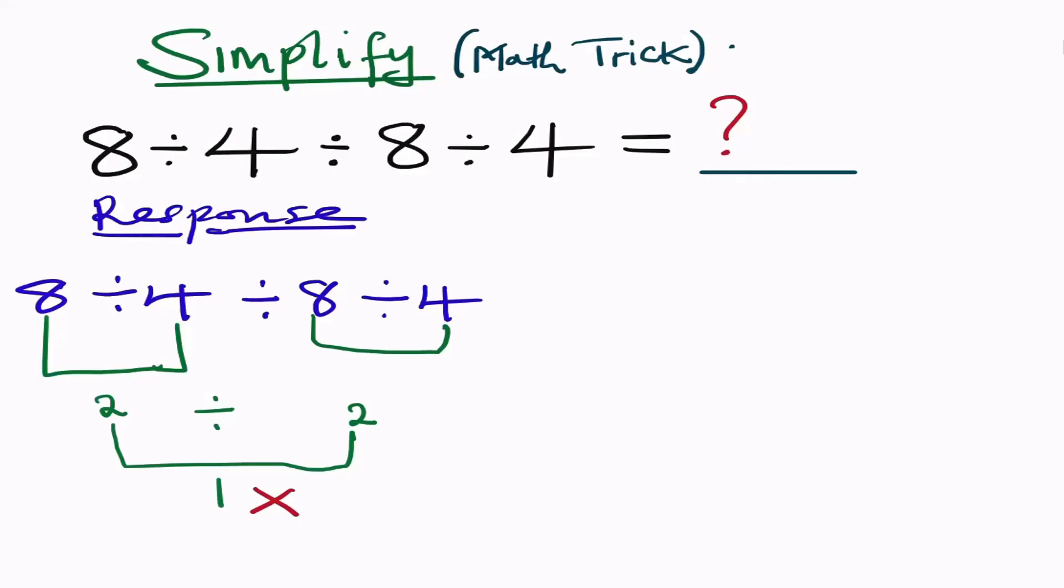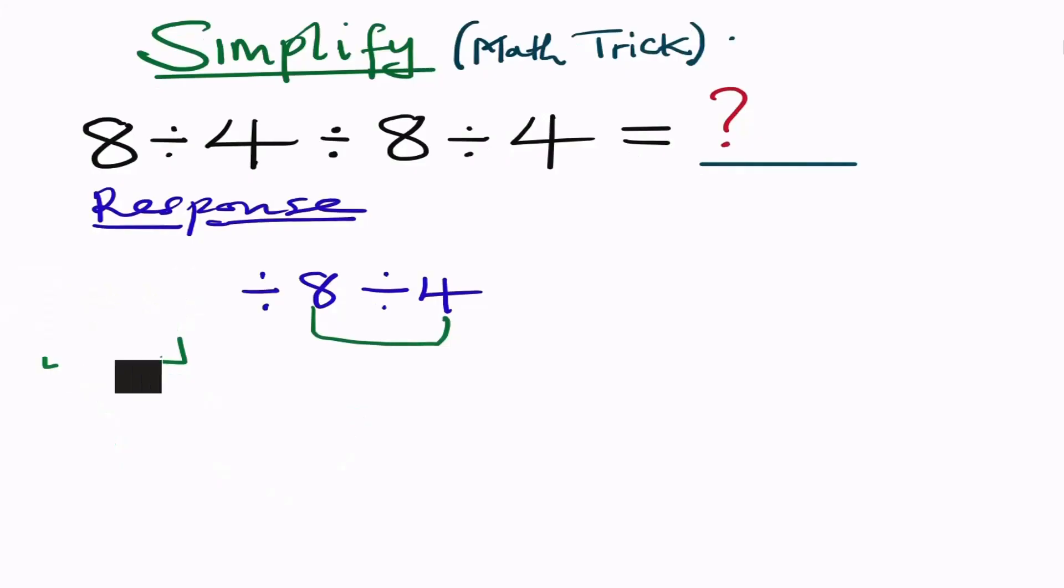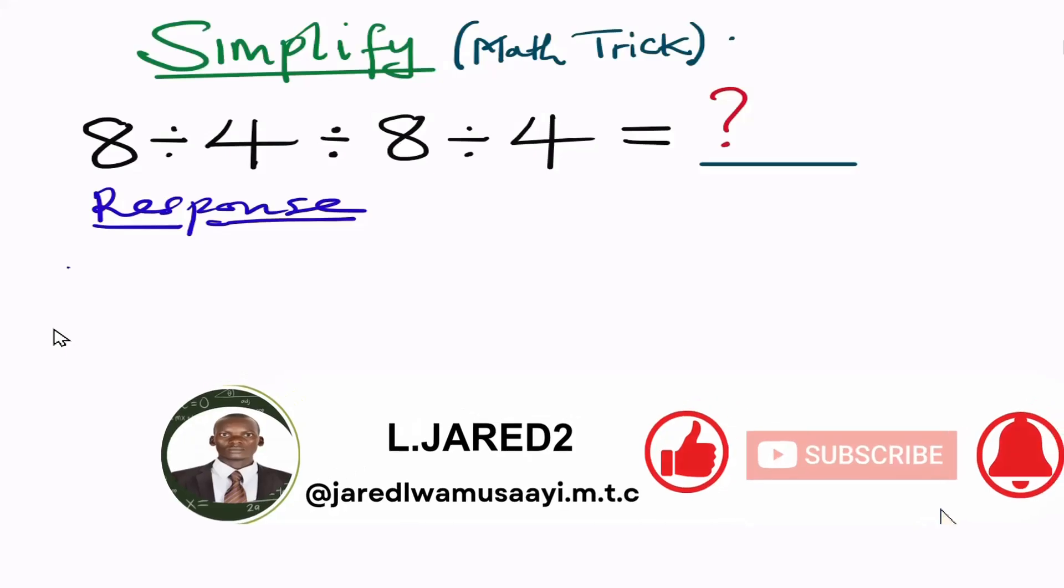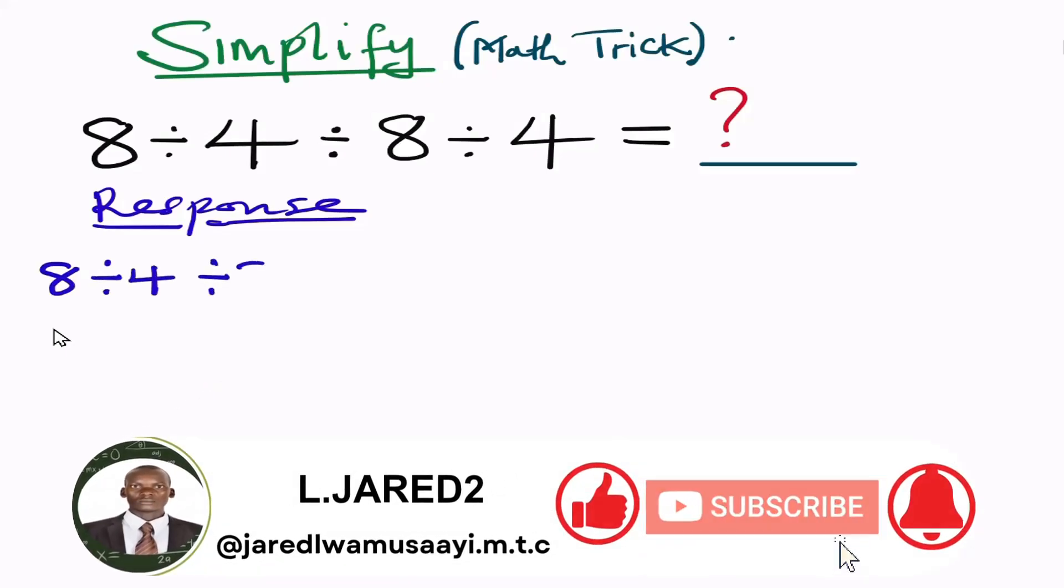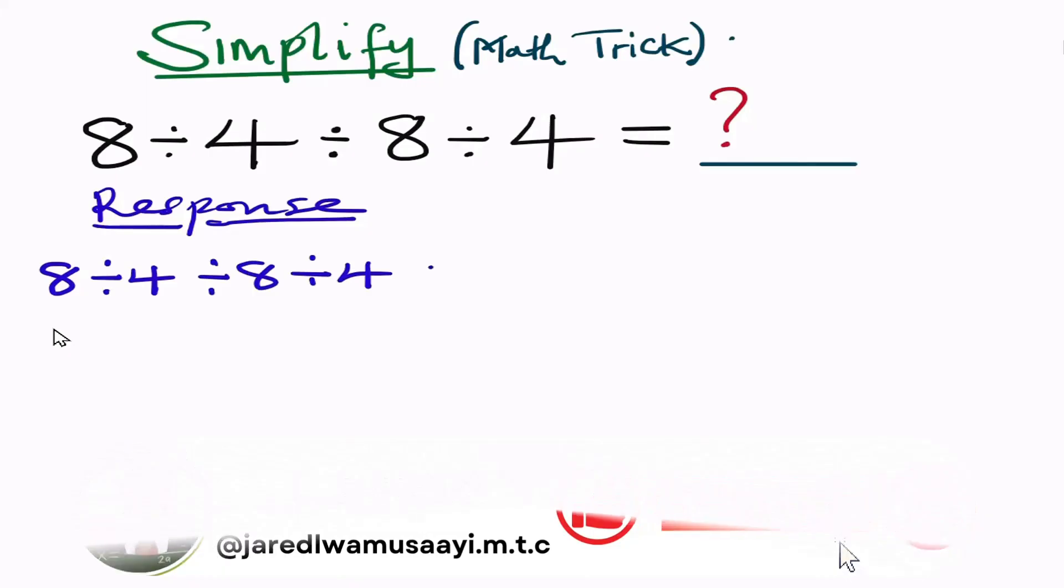So let's see what would be the right answer to this question. So let us have the right response for this. As you are having the 8 divided by 4, then divided by 8, divided by a 4, the division is going to begin from the left hand side. So we are going to get the 8 divided by 4, whereby the answer is a 2, then divided by 8, then divided by a 4.